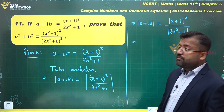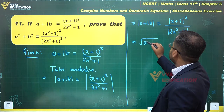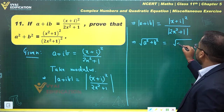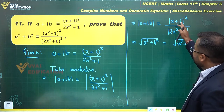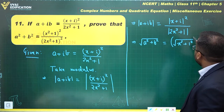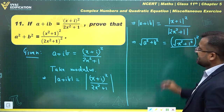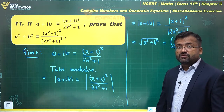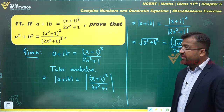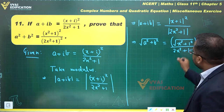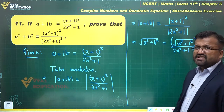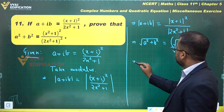The modulus of a plus ib can be written as the square root of a square plus b square. The modulus of x plus i equals the square root of x square plus 1 squared, which is the square root of x square plus 1. The modulus of 2x square plus 1 is simply 2x square plus 1, since it is purely real and a positive quantity — 2x square is greater than or equal to zero for real x.